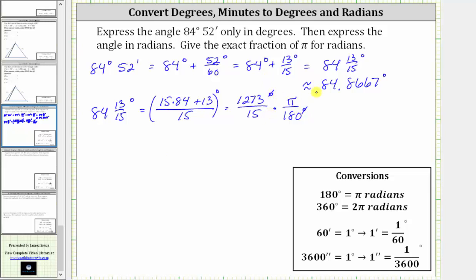So multiplying, notice how we have 1273 pi in the numerator. In the denominator, we have 15 times 180, which is equal to 2,700. And this fraction does not simplify, and therefore this is the angle in radians expressed as an exact fraction of pi. We can also express this as 1273/2700 pi. I hope you found this helpful.